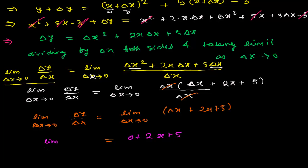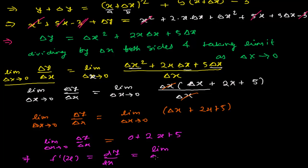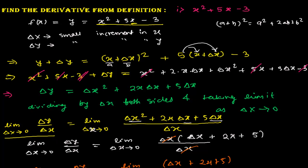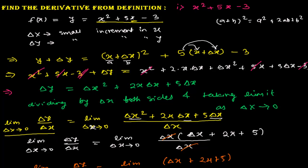Now I can plug in Δx = 0 directly. Substituting gives 0 + 2x + 5. So: lim(Δx→0) Δy/Δx = 2x + 5. This is my derivative — which is f'(x) or dy/dx. So the derivative found by the definition method, or first principle, is 2x + 5.